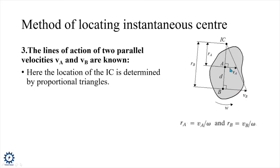Case 3: parallel velocities. We know velocities va and vb and their direction is also known — they are parallel. Here, ra is the distance from the IC to the line of action of velocity at A, and rb is the distance from the IC to the line of action of velocity at B. So rb equals vb divided by omega, and ra equals va divided by omega.